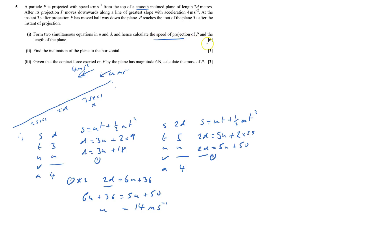So I found the speed of projection and the length of the plane. I just substitute it into equation 1, so d equals 3 times 14 plus 18, which equals 60, and therefore the length of plane 2d is 120 meters.